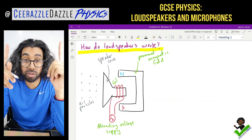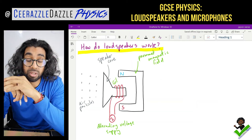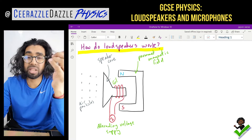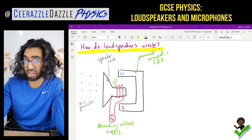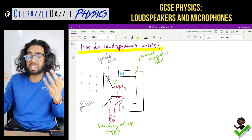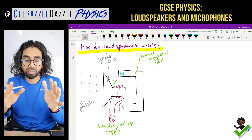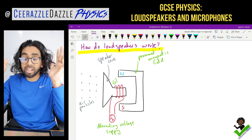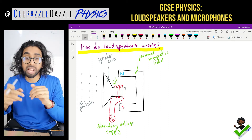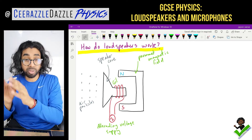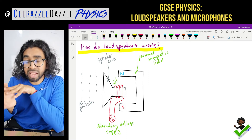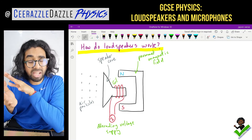Today's question is: how do loudspeakers work? Think about your headphones — you all probably have headphones, and headphones have speakers on them. But how do the speakers actually work? Hopefully we have the idea that electrical energy goes into your headphones and sound energy comes out. But in terms of magnetism, how is it actually working?